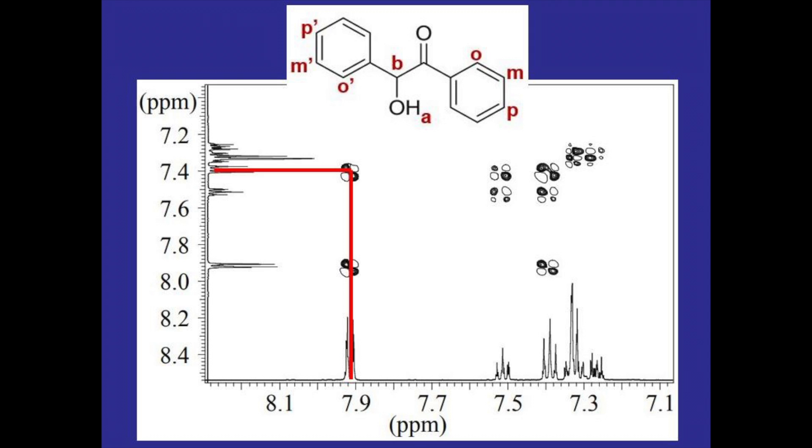So if we look at hydrogen O for example the only other hydrogen that it would see three to four bonds away would be hydrogen M. So we would expect to see two spots above its signal, one for itself and one for hydrogen M.